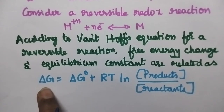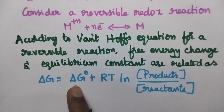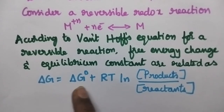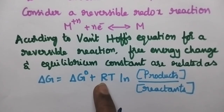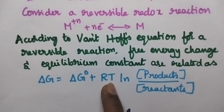Where ΔG is free energy change, ΔG° is standard free energy change, R is gas constant, T is temperature at absolute scale, that is 298 degrees Kelvin or 25 degrees centigrade.